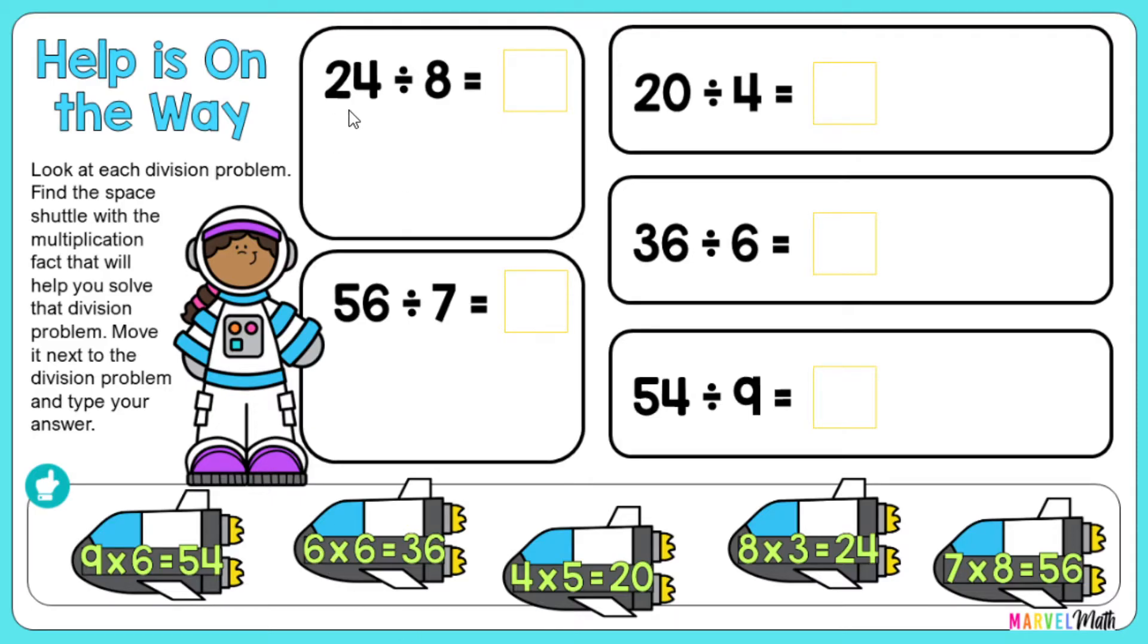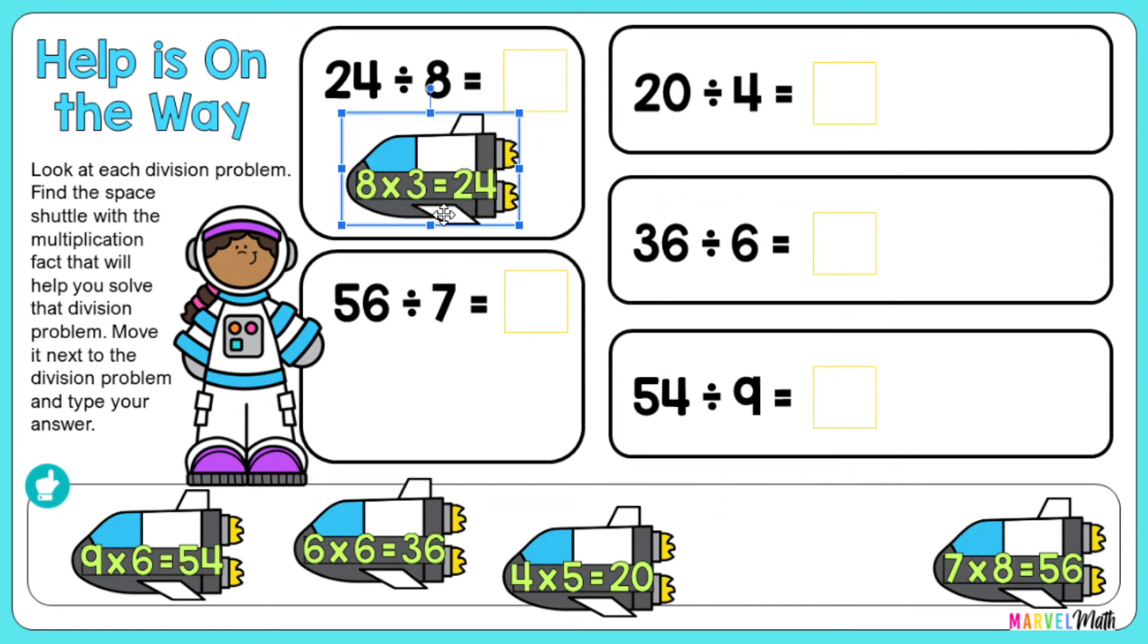So let's look at the first one, 24 divided by 8. In order to use multiplication, I can think 8 times something equals 24. So if I'm looking at all my space shuttles, I see this one right here has a math fact that's going to help me. 8 times 3 equals 24. And now I can type in the answer to my division problem.